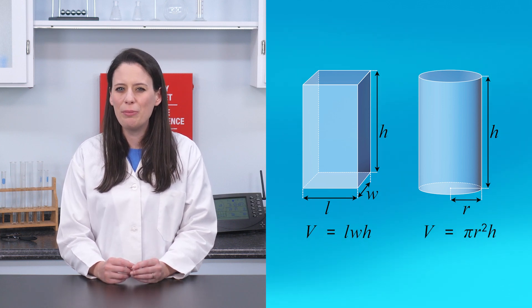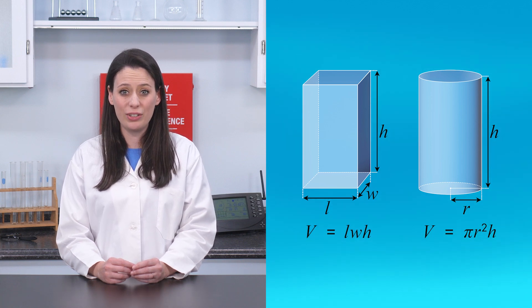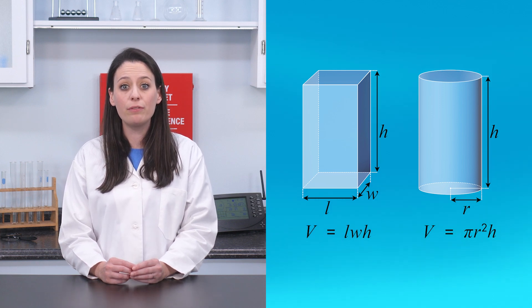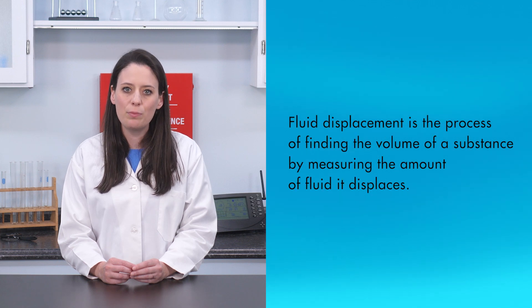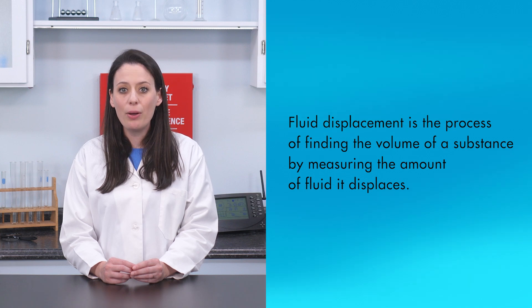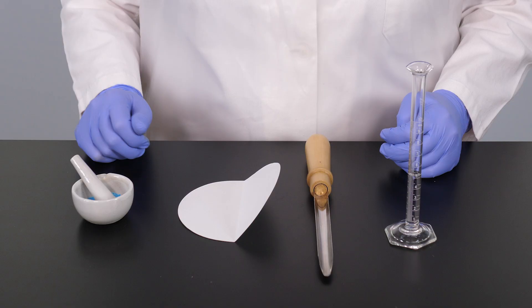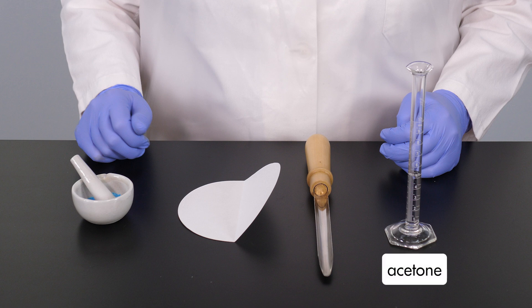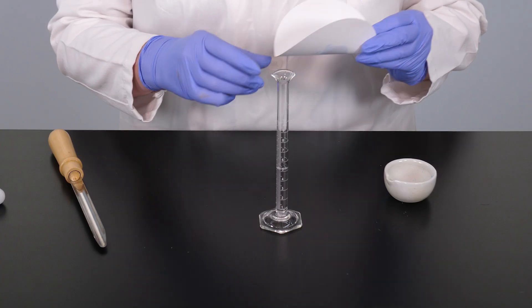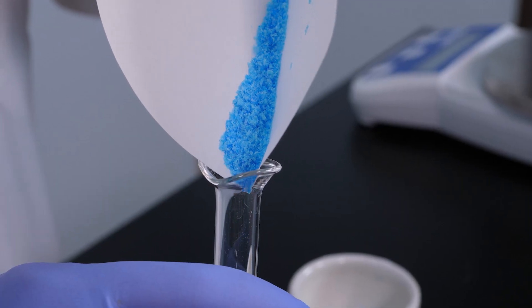But how do we determine the volume of something with an irregular shape? The volume of an irregular solid can be found by fluid displacement. Fluid displacement is the process of finding the volume of a substance by measuring the amount of fluid it displaces. Since the substance does not dissolve in acetone, we can use acetone for fluid displacement. This graduated cylinder contains exactly 5.0 milliliters of acetone.